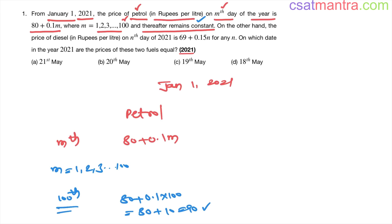On the other hand, the price of diesel in rupees per liter on the nth day of 2021 is - we have one more fuel here - on the nth day the price of diesel is 69 + 0.15n. So on which date in the year 2021 are the prices of these two fuels equal? Now look at the options - we have dates in May month.